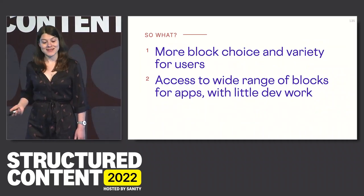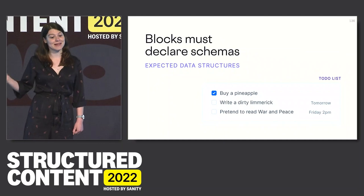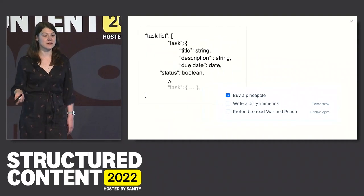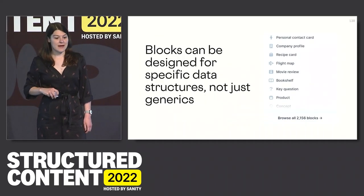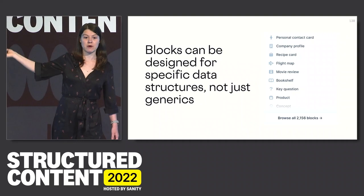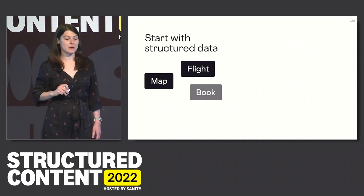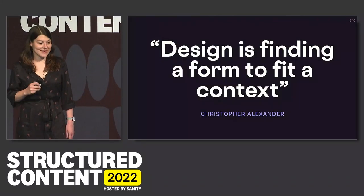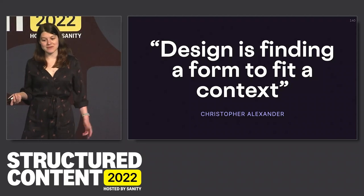The one that most people here will actually care about is that structured data for better UX and interoperability becomes possible with these blocks. Our blocks must declare schemas — they must declare expected data structures. My to-do list block takes in a task, and that task has an expected list of properties: a title, a string, a due date, a status. That means blocks can be designed for specific data structures rather than being generic formats — a flight map that takes in a flight object, a movie review that takes in a movie schema, a bookshelf that only takes in books. As Christopher Alexander said, 'design is finding a form to fit a context.' Structured data is a kind of context, and blocks give us the flexibility to find the right form for it.